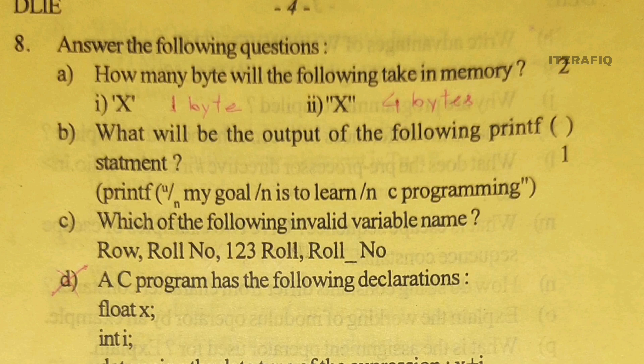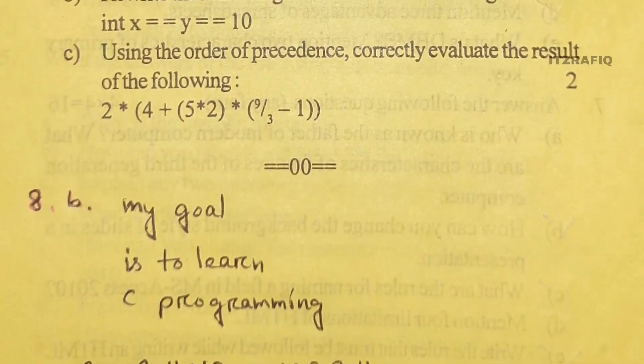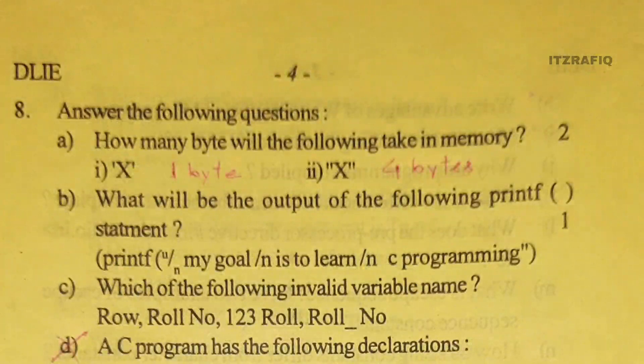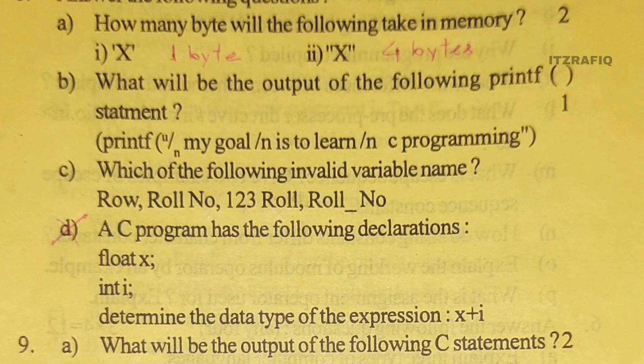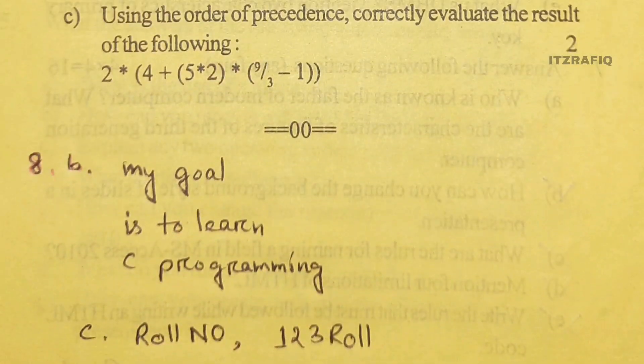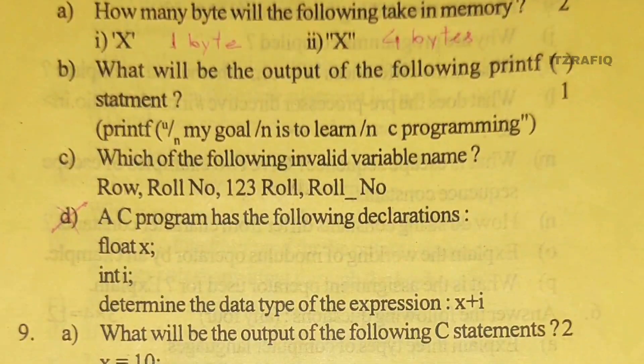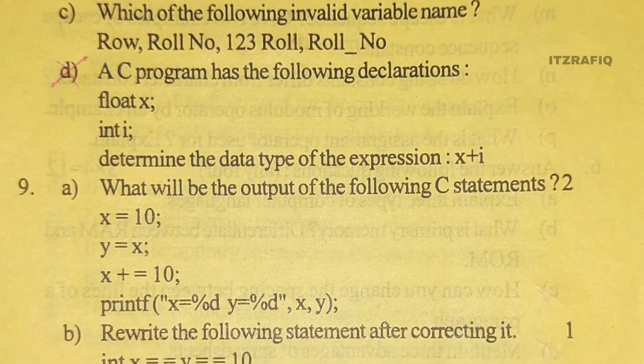What will be the output of the following printf statement? Which of the following are invalid variable names? The answer is 'rule number' because of the space. Rule number 123 is invalid because it starts with a number.